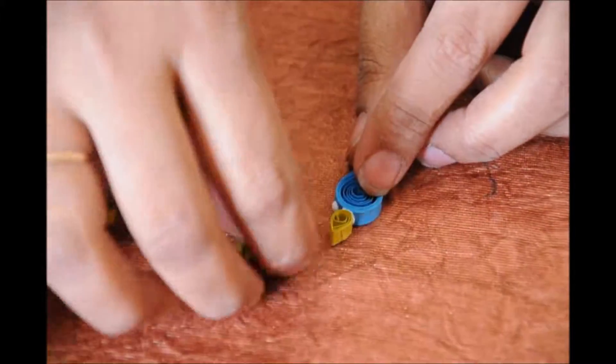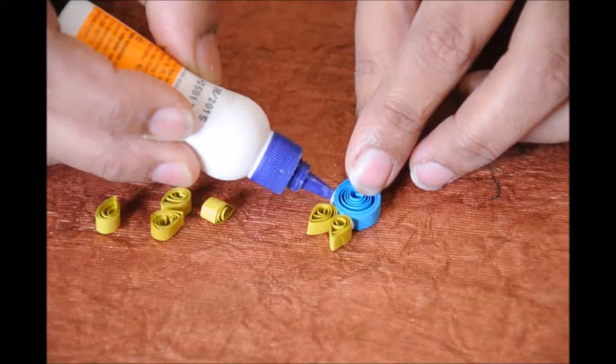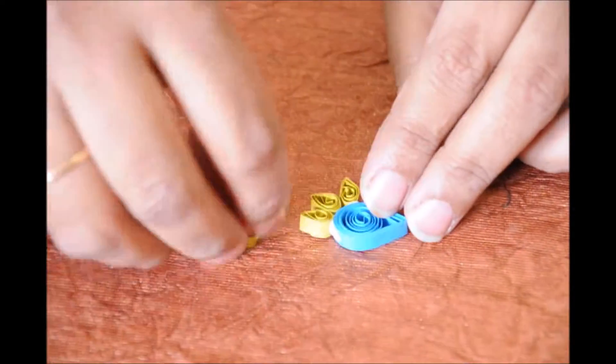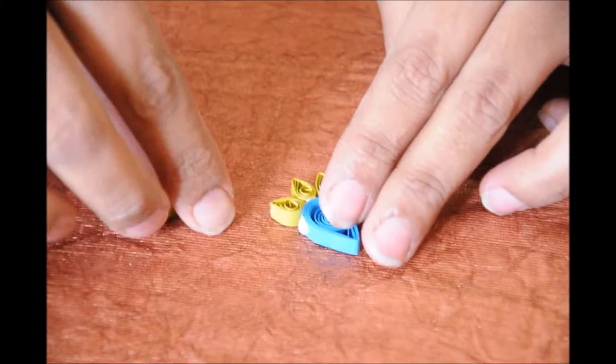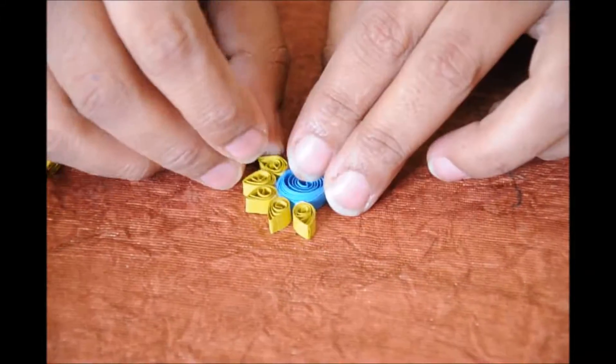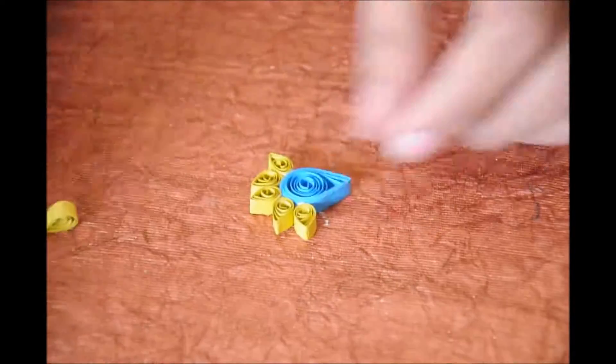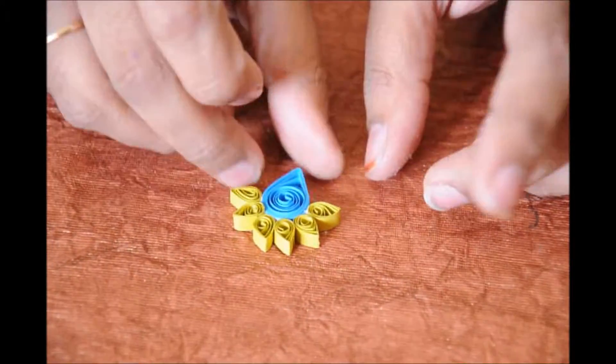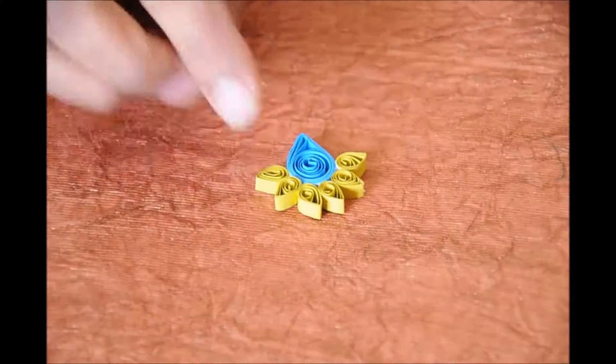I am just going to glue them in the bottom part of the drop shape. The beautiful earring structure is ready.